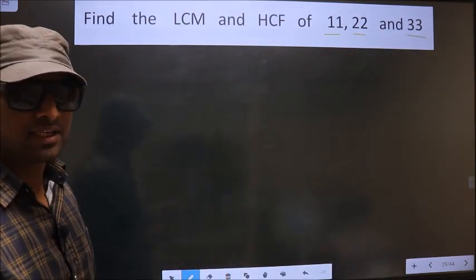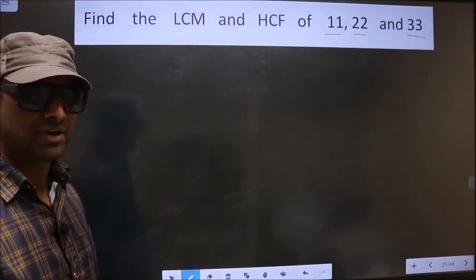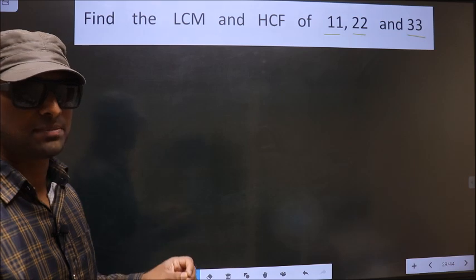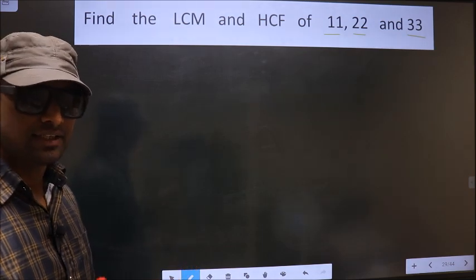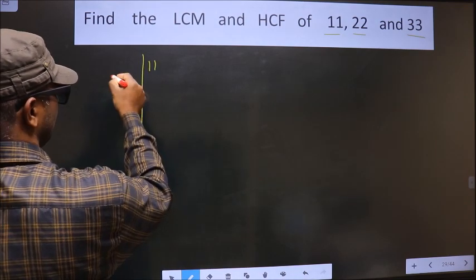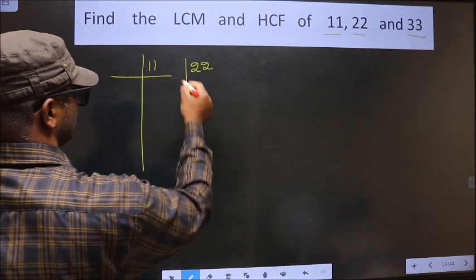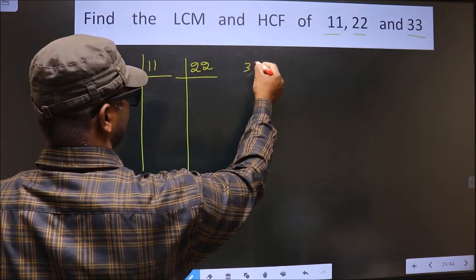To find the HCF and LCM, first we should do the prime factorization of each number separately. That is 11, 22 and 33.